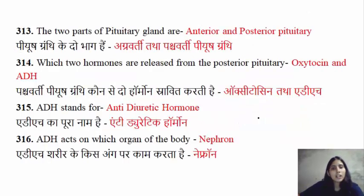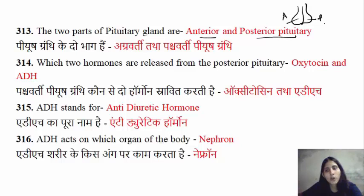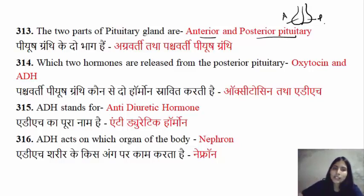The pituitary gland has two parts: the anterior pituitary and the posterior pituitary. In the anterior pituitary, many hormones are released. But in the posterior pituitary, there are only two hormones released.